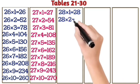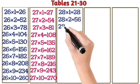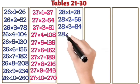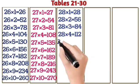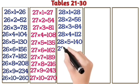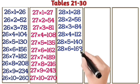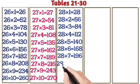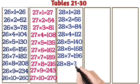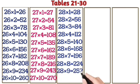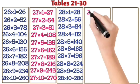28 ones are 28. 28 eights are 224. 28 nines are 268. 28 sevens are 196. 28 eights are 224. 28 nines are 252. 28 tens are 280.